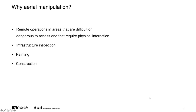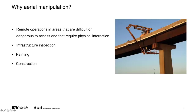Why aerial manipulation? Generally, we hope to use it for remote operations in areas that are difficult and dangerous for humans to access and that also require physical manipulation. One simple example we've already been working on is infrastructure inspection. For bridge inspection, today you still need cranes or complex machines because you need to touch the structure to make sure it's still intact and that the steel is not corroding too much.